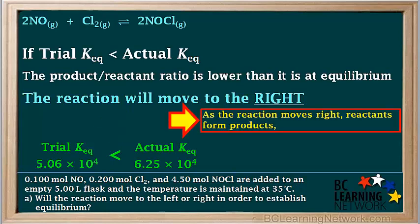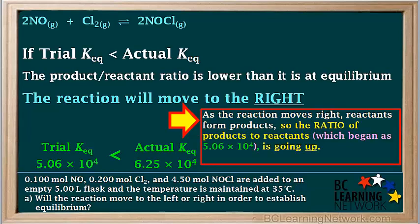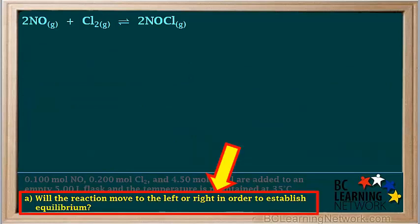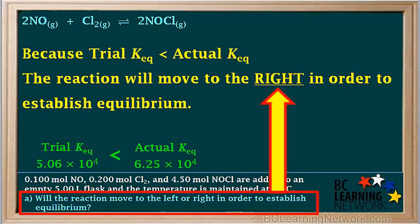Moving to the right means reactants are forming products, so we are getting more products and less reactants. Thus the ratio of products to reactants, which began as 5.06 × 10⁴, is gradually going up. The ratio will keep going up until it reaches 6.25 × 10⁴, the actual Keq value, at which point equilibrium will be established and the concentrations will no longer change. So for part A: because trial Keq is less than the actual Keq, the reaction will move to the right in order to establish equilibrium.